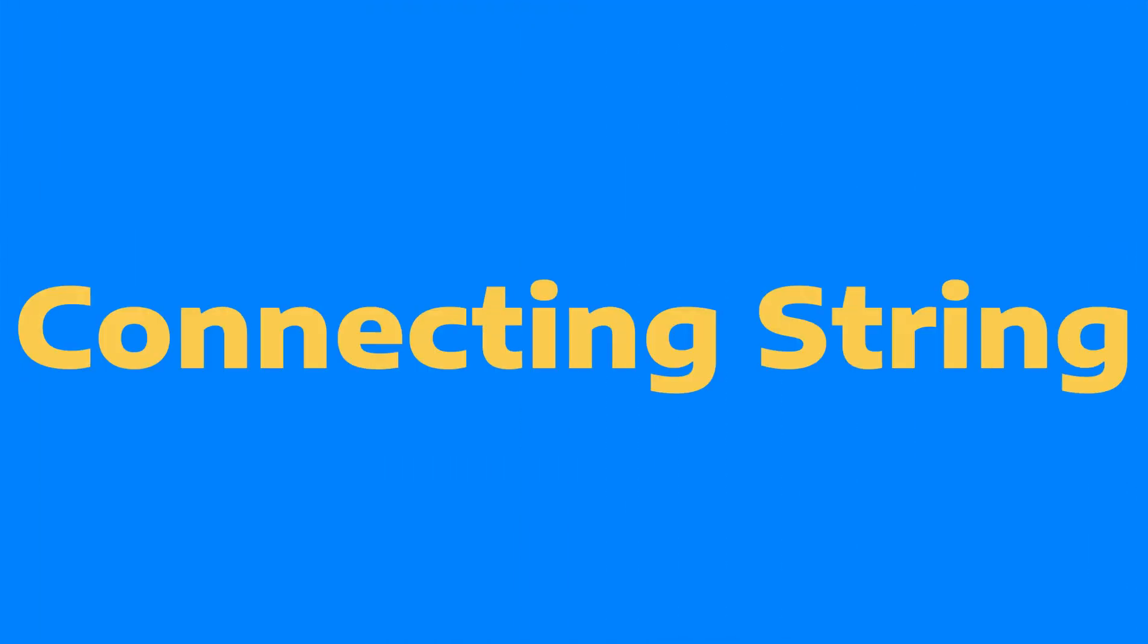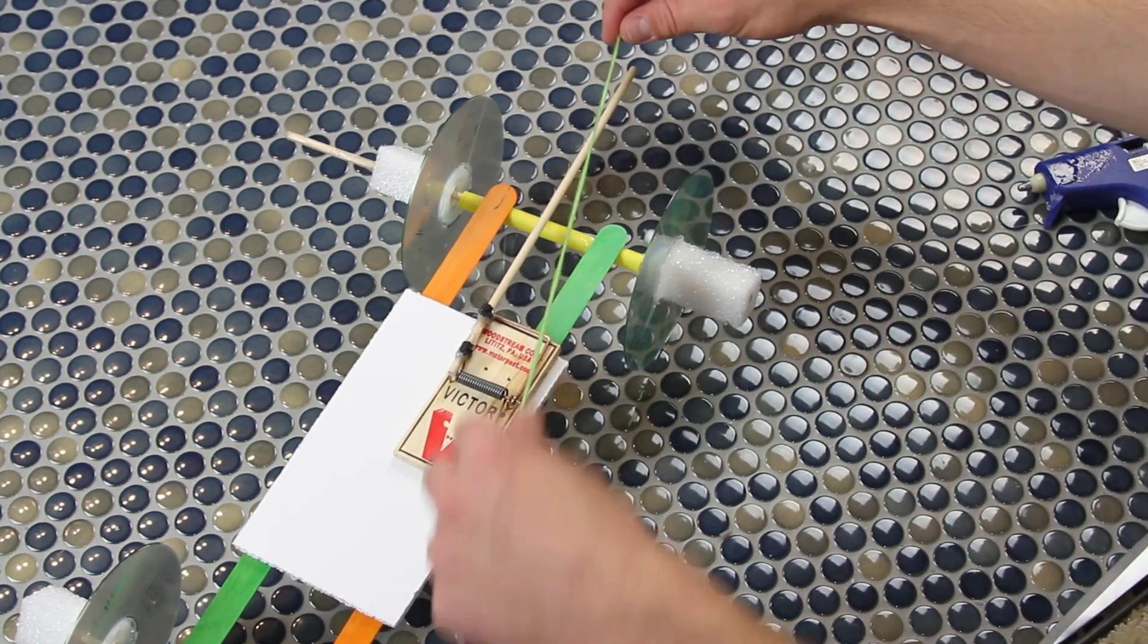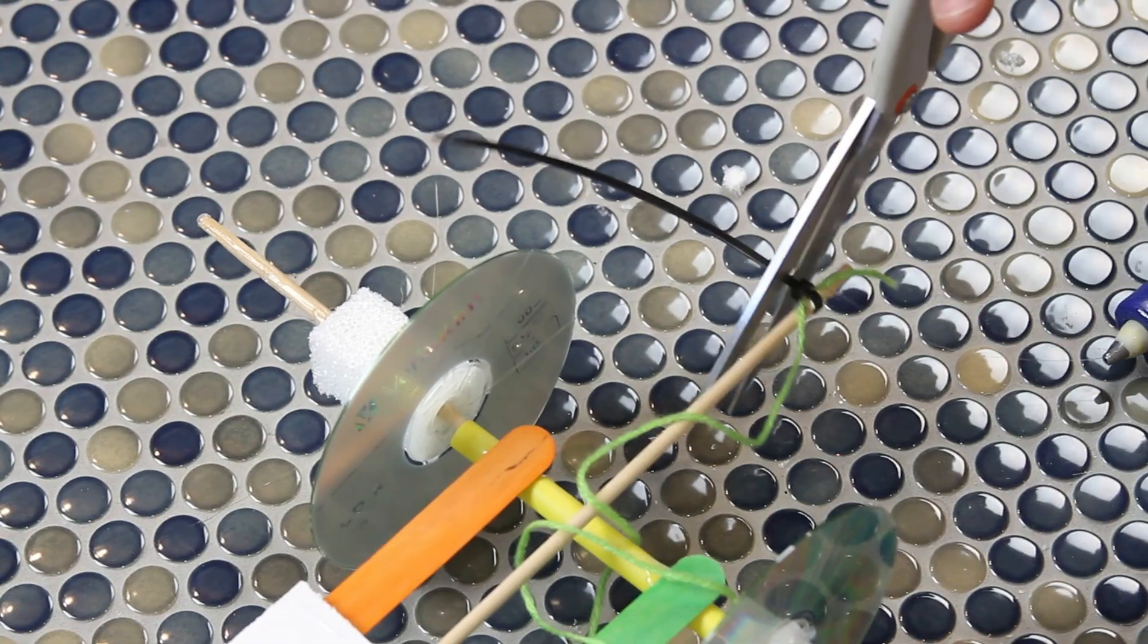Friends, we're going to use a piece of string to connect that lever arm to that zip tie that we just made. You can either tie it and glue it, or zip tie and glue it to the top of that dowel.